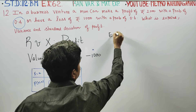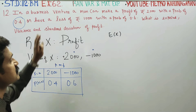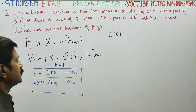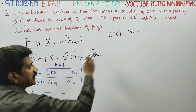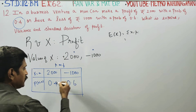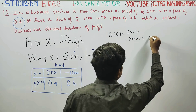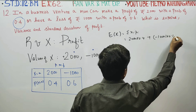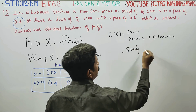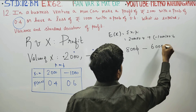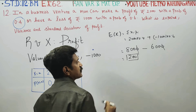Now for the expected value. The expectation E(X) equals the sum of x times P(X = x). So E(X) = 2000 × 0.4 + (-1000) × 0.6. That gives us 800 minus 600, which equals 200. Wait — computing: 2000 × 0.4 = 800, minus 1000 × 0.6 = 600, so E(X) = 800 - 600 = 200. Actually E(X) = -200.